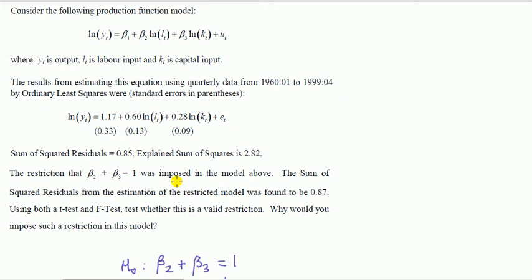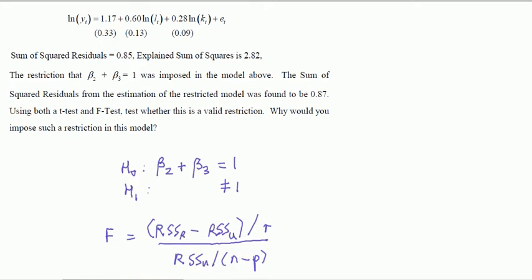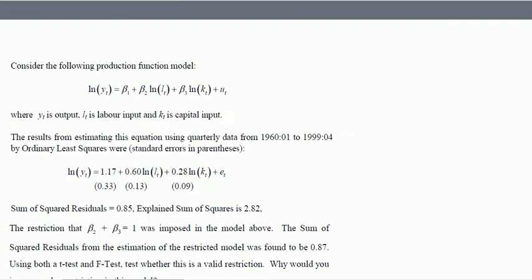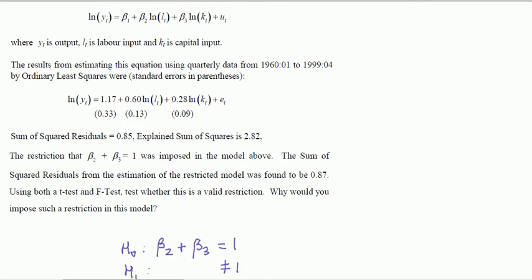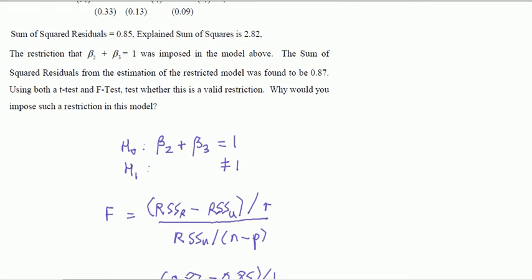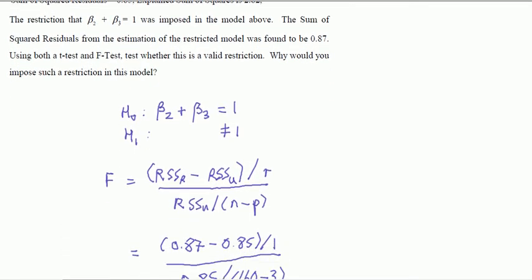So let's step through this example. Step one: state the null and alternative. The null is that the restriction holds, that these two added together is equal to one, those two being the slope parameters. So slope parameters β₁ and β₂ added together equal one. Why might we want to do that? We'll discuss that later. For the alternative, because the question doesn't say, we'll do a two-tailed test.